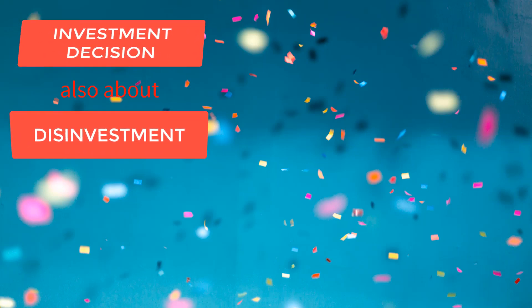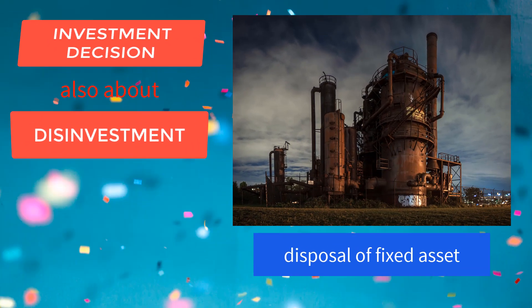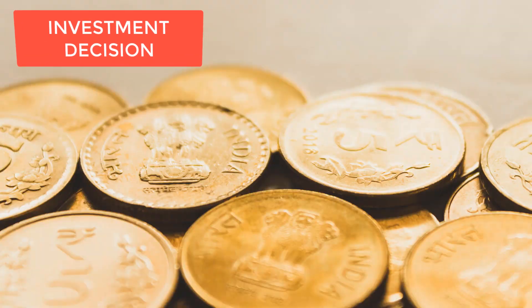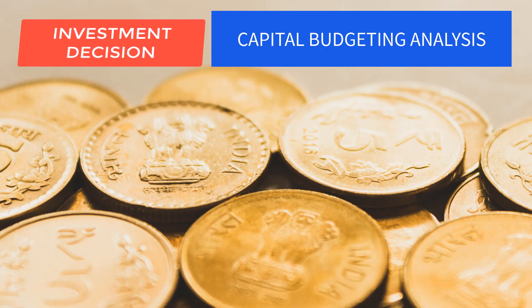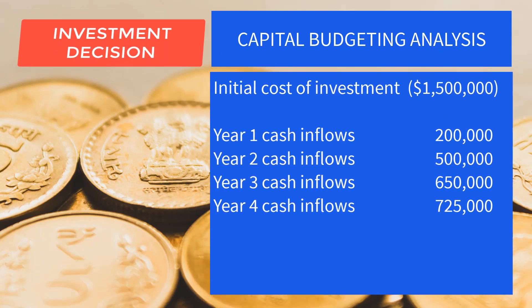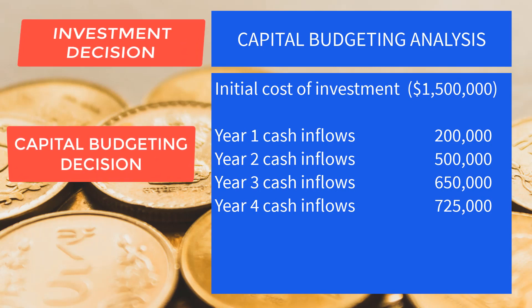Back to investment decision — it is also about disinvestment, the opposite side of investment, such as shutting down a certain branch and disposal of a fixed asset. Investment decision is supported by capital budgeting analysis, which determines whether a certain project will generate return or cash flow to recover the initial cost of investment. That's why investment decision is also called capital budgeting decision.